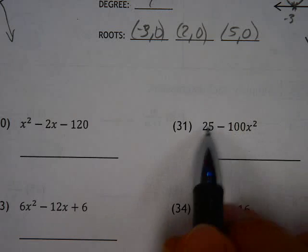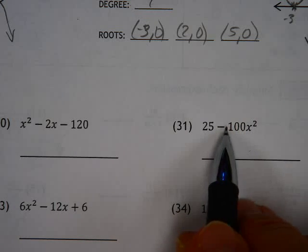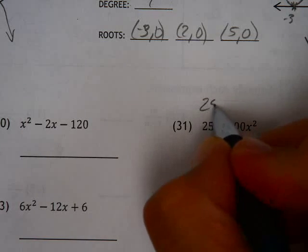One thing that's often overlooked in factoring is that sometimes you can just take something out and I would start there. You can take out a 25 here.